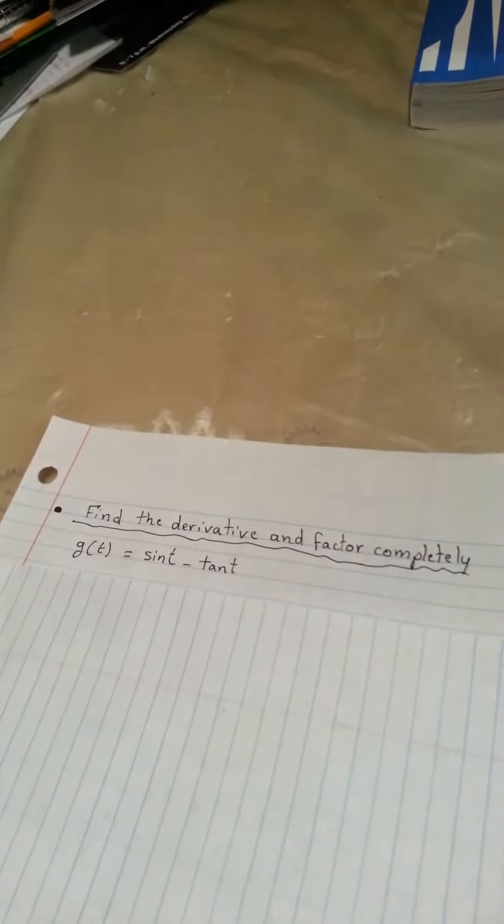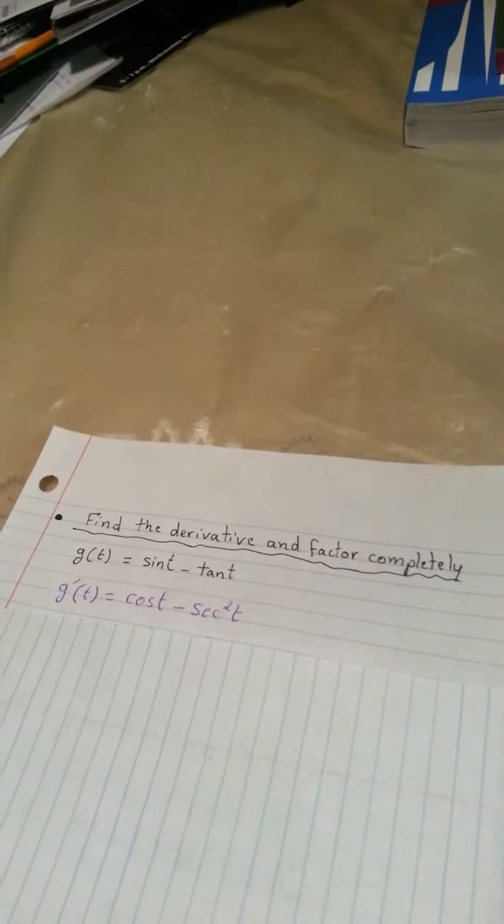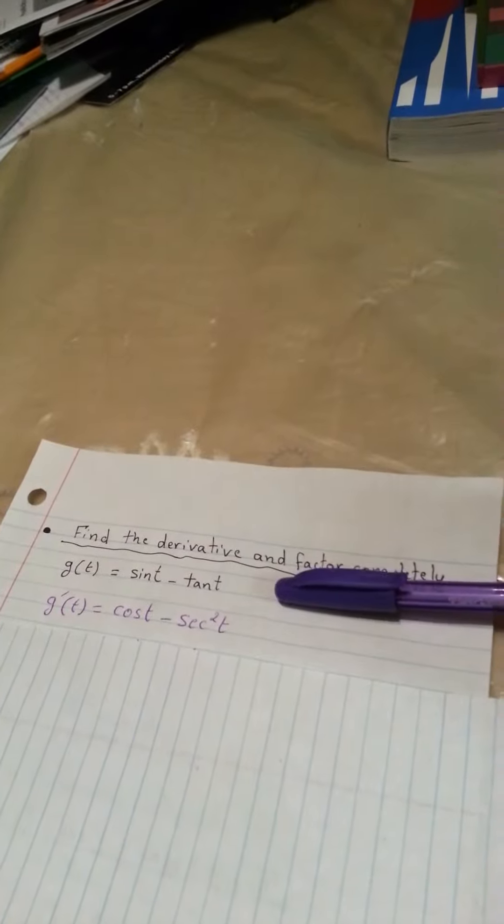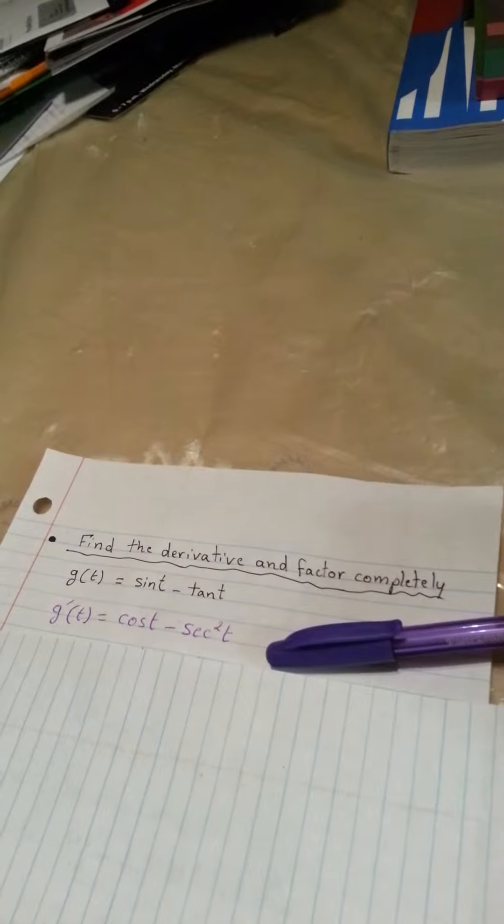First, you would need to know the formula conversion of the derivatives. Derivative of sine t is cosine t and derivative of tangent t is secant squared t.